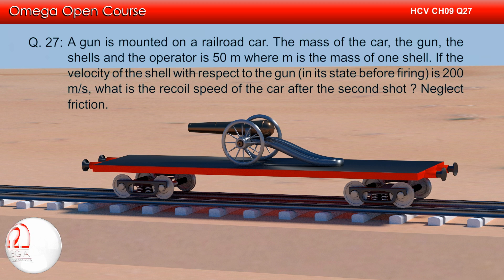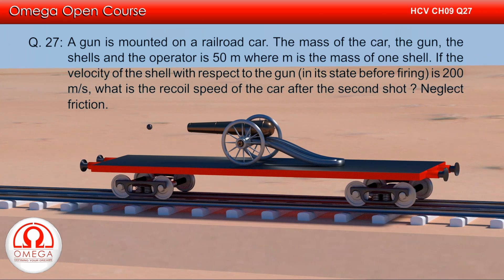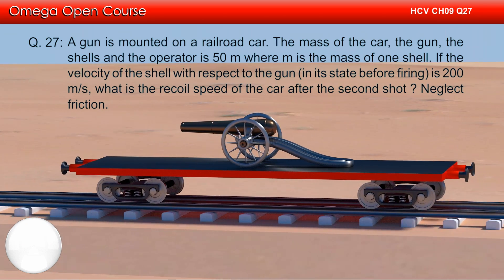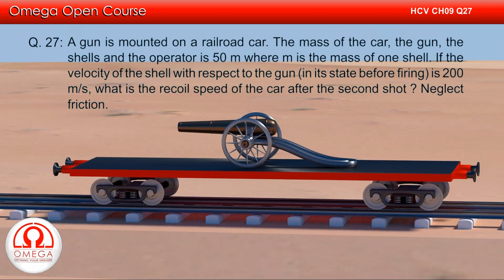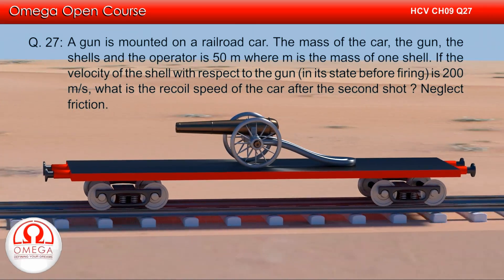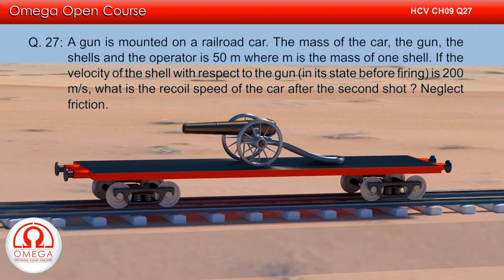A gun is mounted on a railroad car. The mass of the car, the gun, the shells, and the operator is 50m, where m is the mass of one shell. If the velocity of the shell with respect to the gun in its state before firing is 200 m per second, what is the required speed of the car after the second shot?